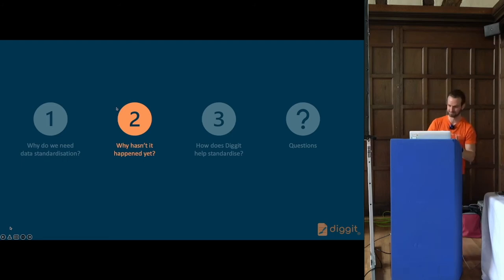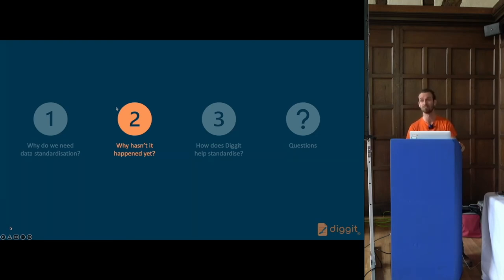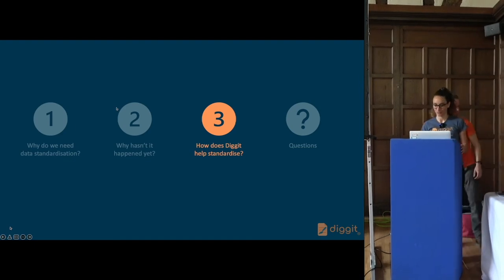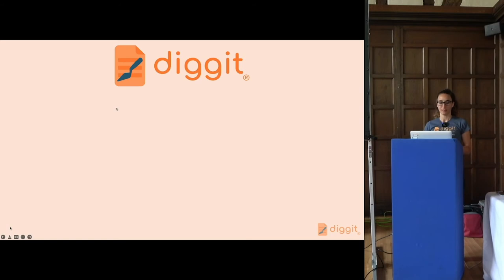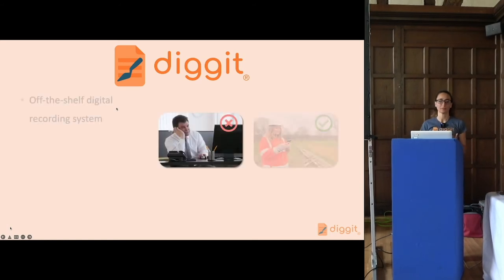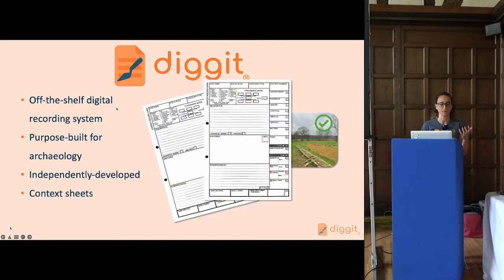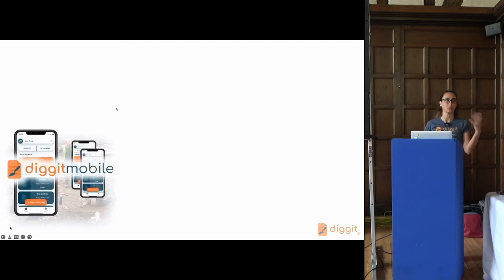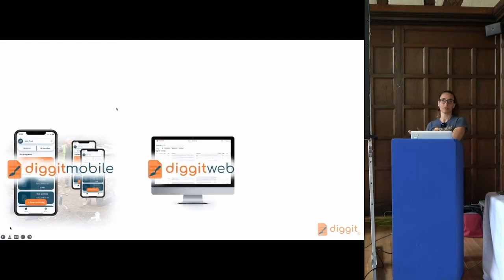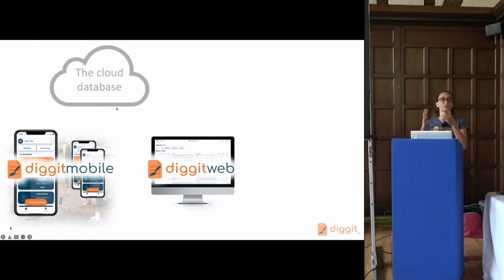So we've looked at why we need data standardization and the obstacles that have prevented us achieving it. We've spent a couple of years building a solution to overcome these obstacles, and we gave it the cheesy working title of Digit, which unfortunately stuck. Digit is a custom-built digital recording system for archaeology — not reconfigured office software. It was independently developed without any affiliations, and it currently replaces the need for context sheets and trench sheets. The system has two components: Digit Mobile, a mobile app for recording in the field, and Digit Web for exploring and exporting live site data, and they both talk to each other via a cloud database.